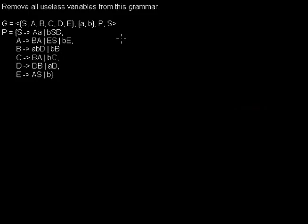I'd like to show you how to remove useless variables from a context-free grammar. These are actually called non-terminals, but at this moment we are allowed to call them variables because it's easier to distinguish the words 'variables' and 'terminals'.